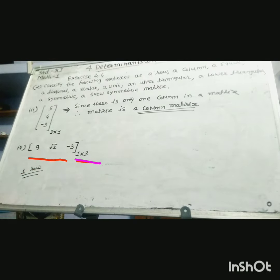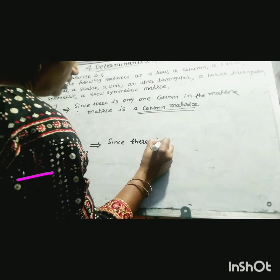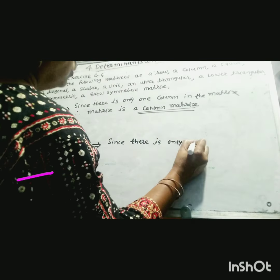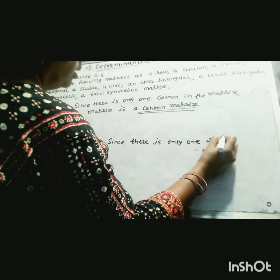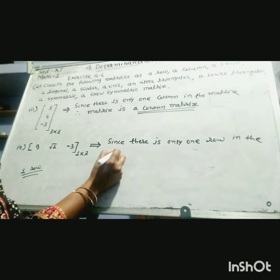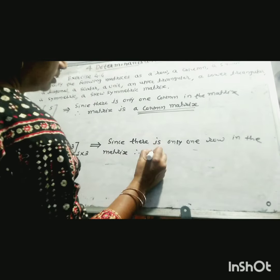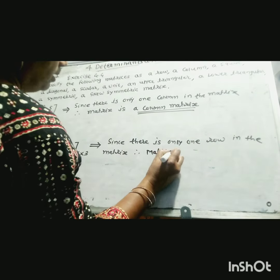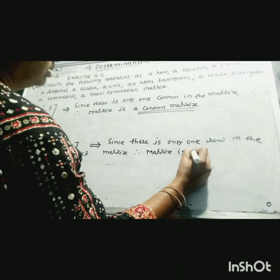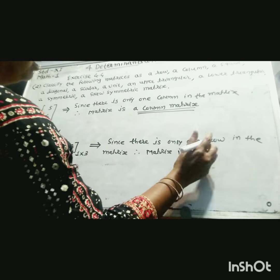In this matrix there is only 1 row. Since there is only 1 row in this matrix, therefore this matrix is a row matrix.